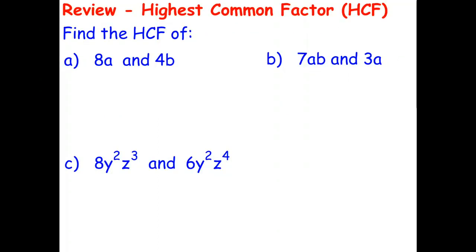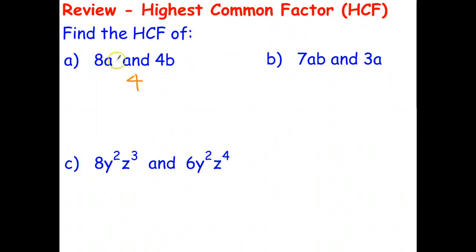We can also find the highest common factor of algebraic expressions. Looking at 8a and 4b: the variables a and b are not common. Looking at the numbers 8 and 4, the biggest common factor is 4. So the highest common factor of 8a and 4b is 4.